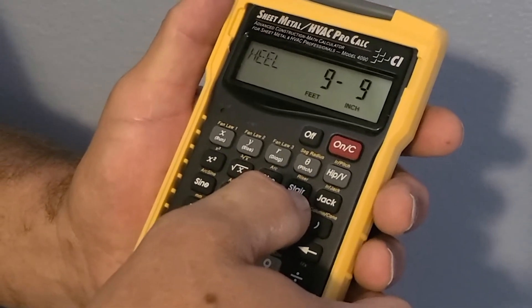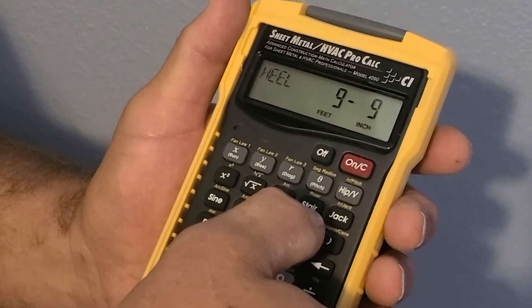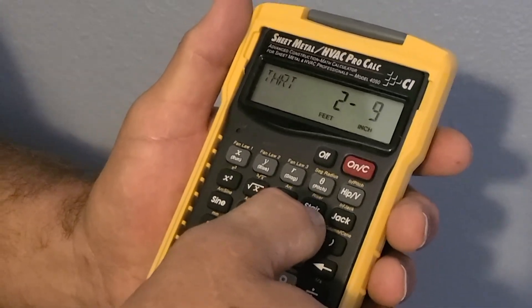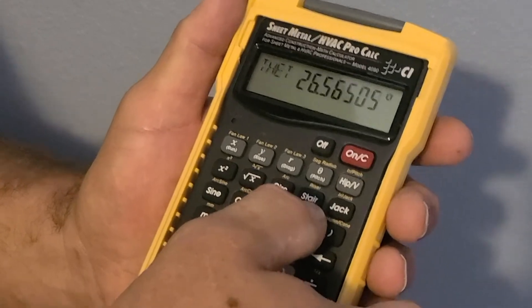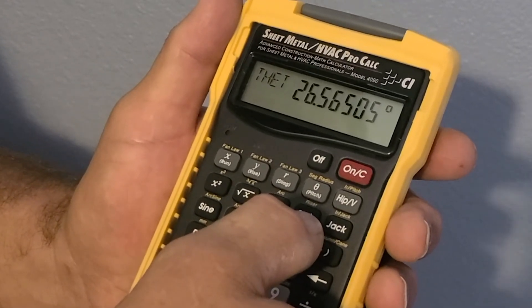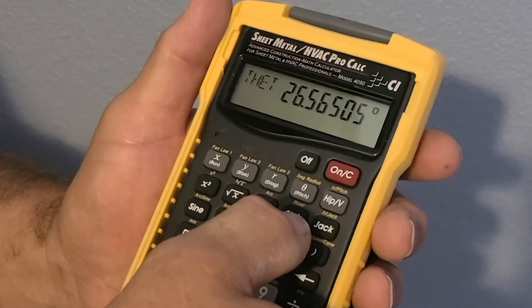The third push gives you the heel measurement of 9 feet, 9 inches. The fourth push gives you the throat measurement of 2 feet, 9 inches. And the fifth push gives you the theta, which is 26.56505 degrees.